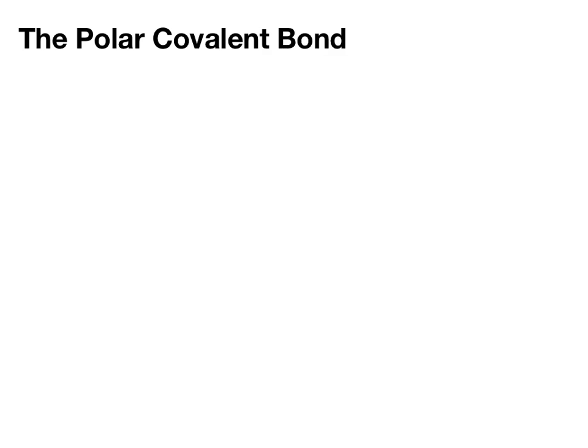We talked about polar covalent bonds in the previous chapter, so I just want to review because we're going to be dealing with polar bonds in this chapter on acids and bases as well. The definition is a bond where electrons are unequally shared between two atoms.